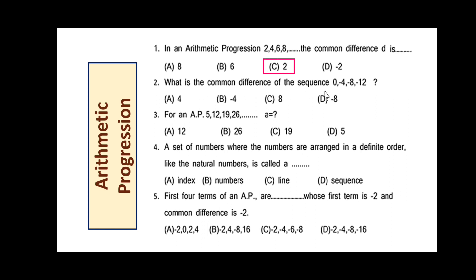What is the common difference of the sequence 0, -4, -8, -12, ...? -4 - 0 = -4 and -8 - (-4) = -4. So the common difference is -4 and the option is B. For the AP 5, 12, 19, 46, and so on, the first term A is 5, so the option is B.